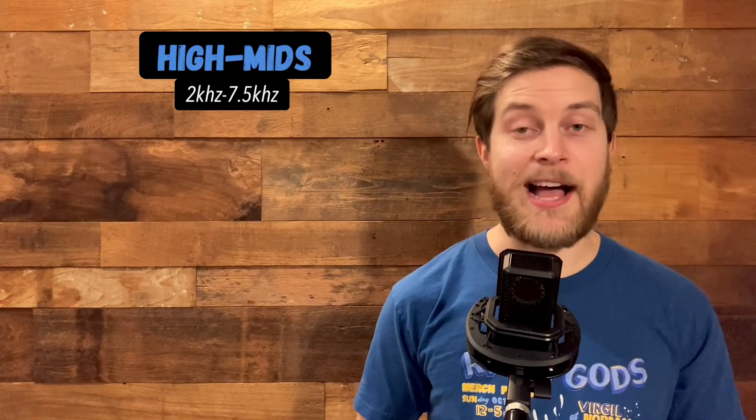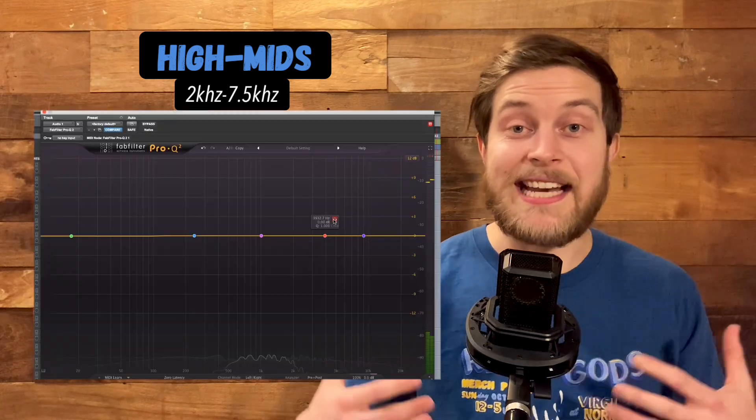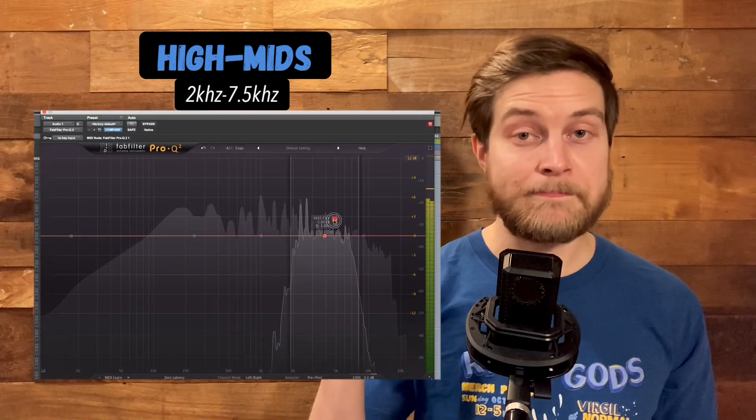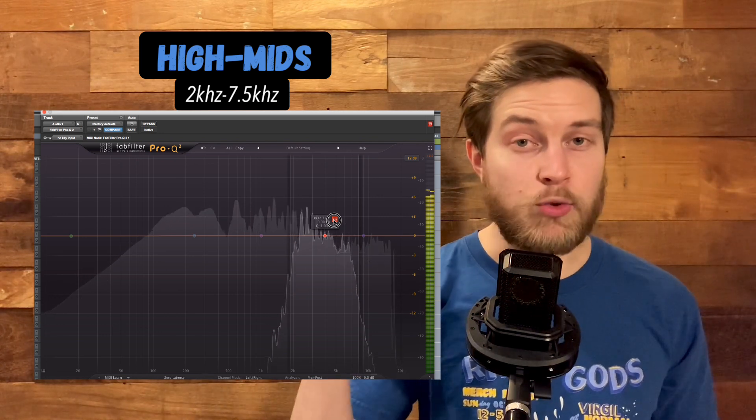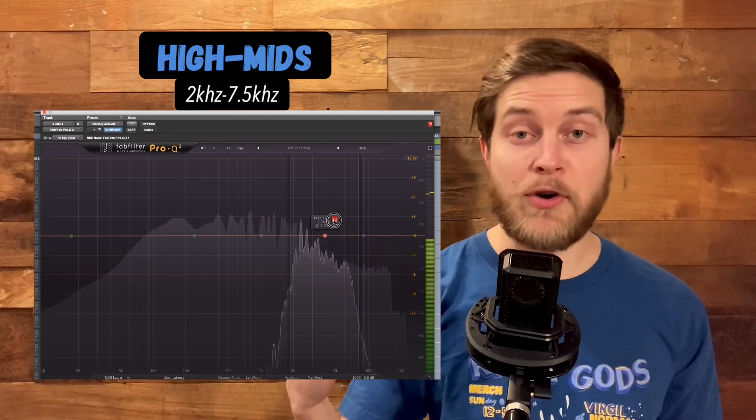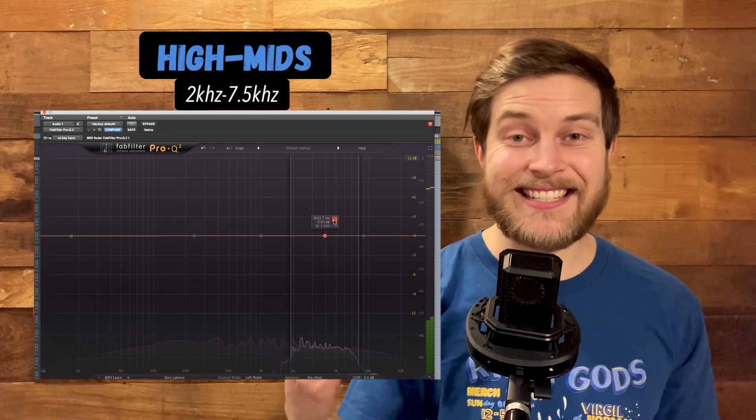Next, the high mids—the brightness and attack of our song. This region is where you can boost any given track if you want that track to cut through the mix. The top of the vocals, strings, synths, and the attack of all the drums all primarily live in this space.